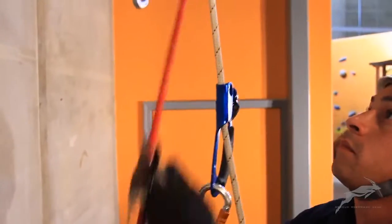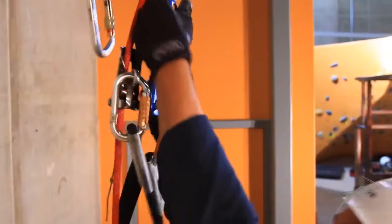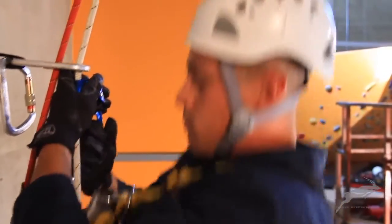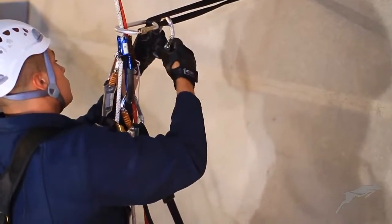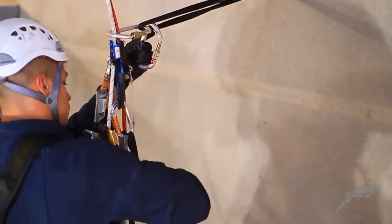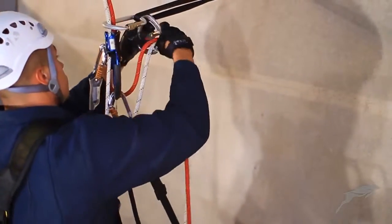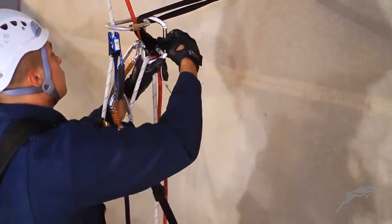The technician ascends until level with the deviation anchor point. The technician's working and safety ropes are grasped below the chest ascender and backup device and placed into a spare carabiner attached to the deviation.